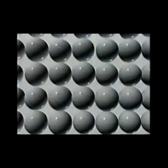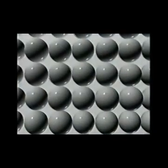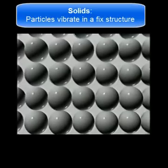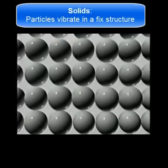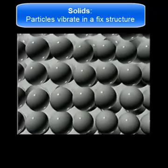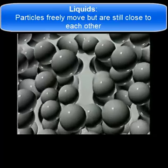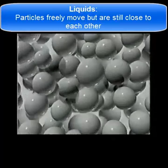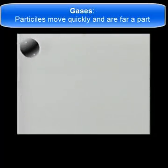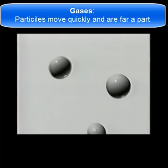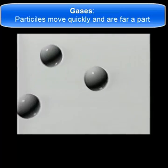The way solids, liquids, and gases behave gives us clues about how their particles are arranged. In solids, the particles are in a fixed framework — they're held close together and vibrate. In liquids, the particles are still in contact but they're free to move around. The particles in a gas are far apart; they move quickly and randomly in any direction.